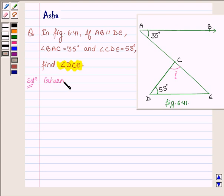We are given that AB is parallel to DE, angle BAC is equal to 35 degrees, and angle CDE is equal to 53 degrees.